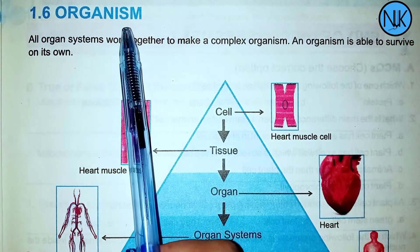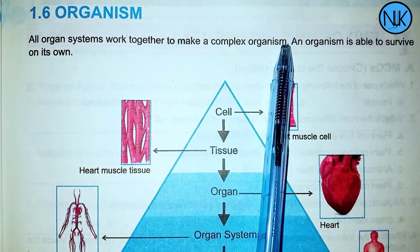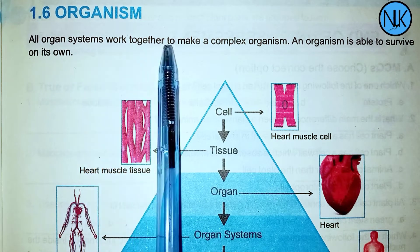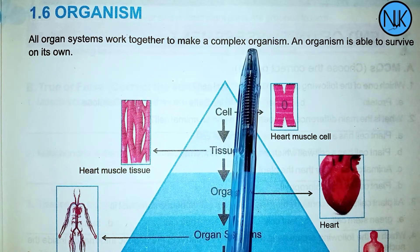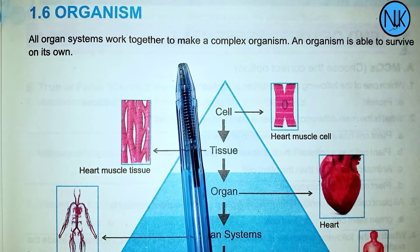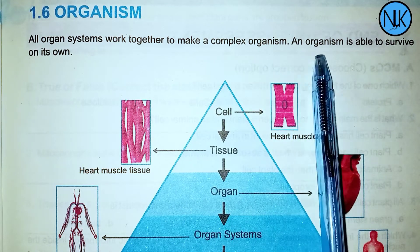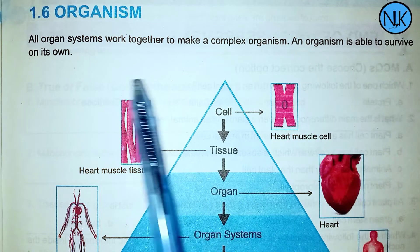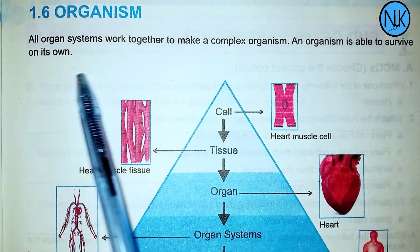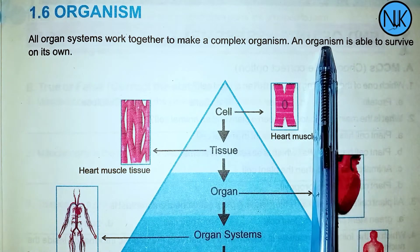All organ systems work together to make a complex organism. An organism is able to survive on its own because all its systems are integrated.